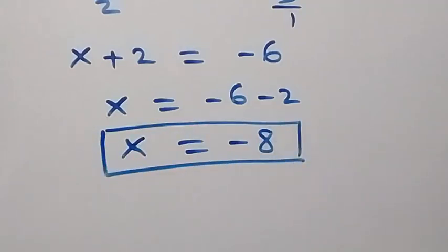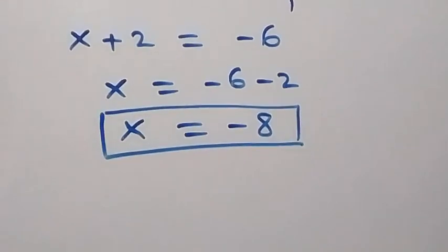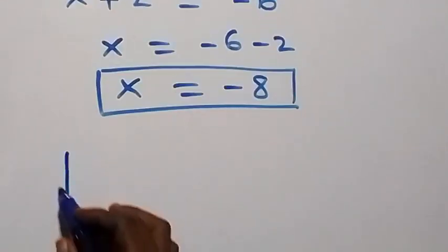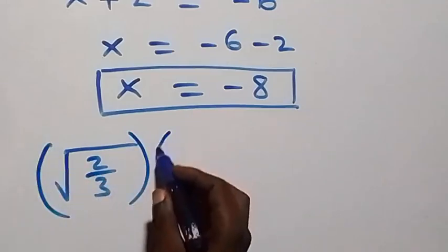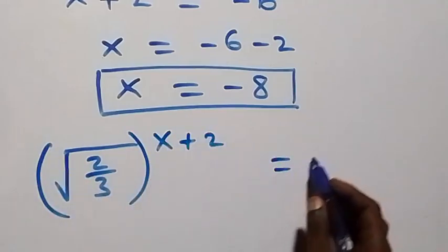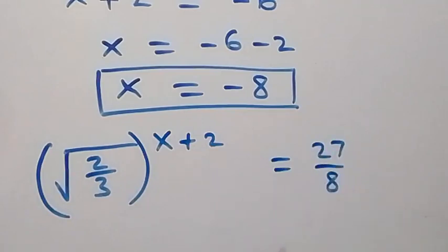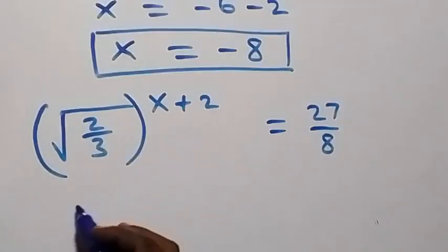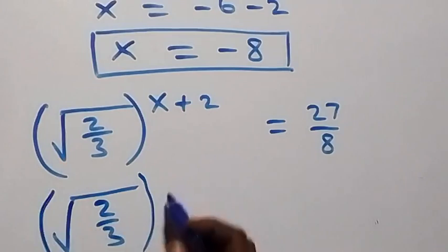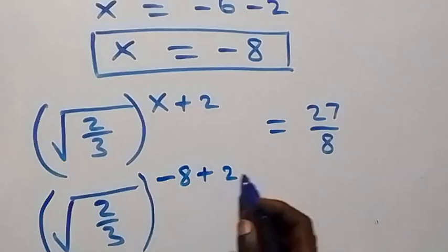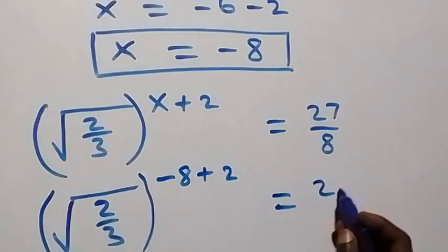Now let us check if x equals minus 8 satisfies the given problem. Substituting x equals minus 8 into the original equation, we get the square root of 2 over 3, raised to power minus 8 plus 2.